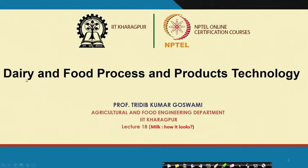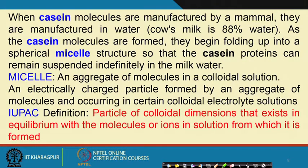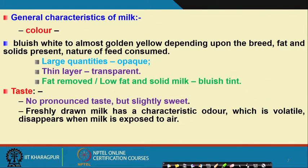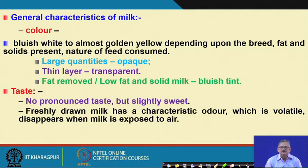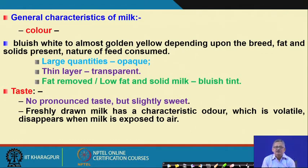In this class, in dairy and food process and products technology, lecture number 18, we come to how milk looks. The color of milk can be white, or a little golden yellow in color, depending on the source and constituents. High fat milk tends to be golden yellow in color.